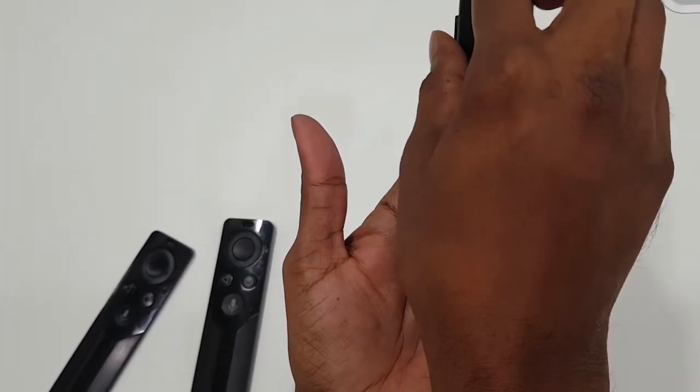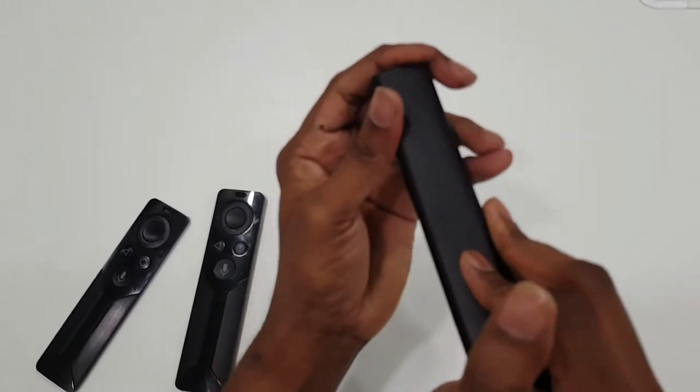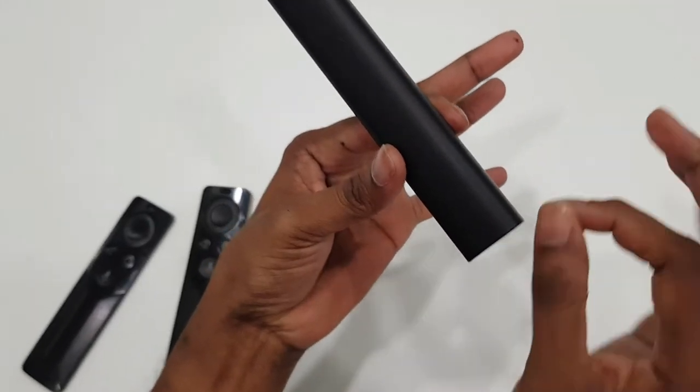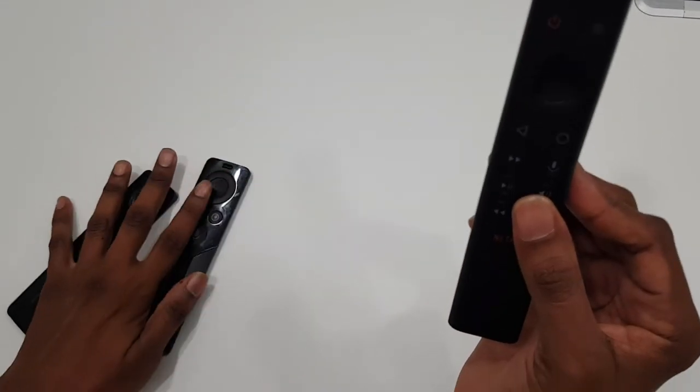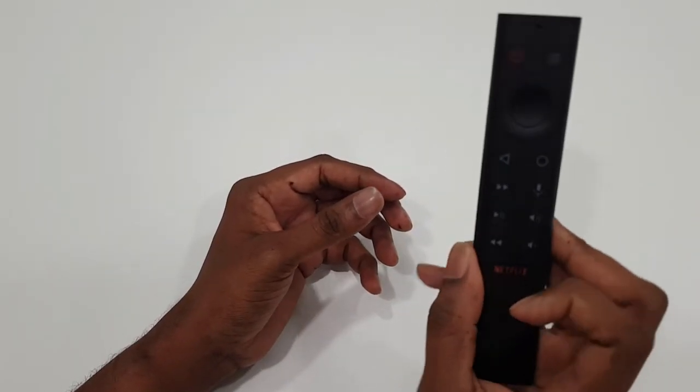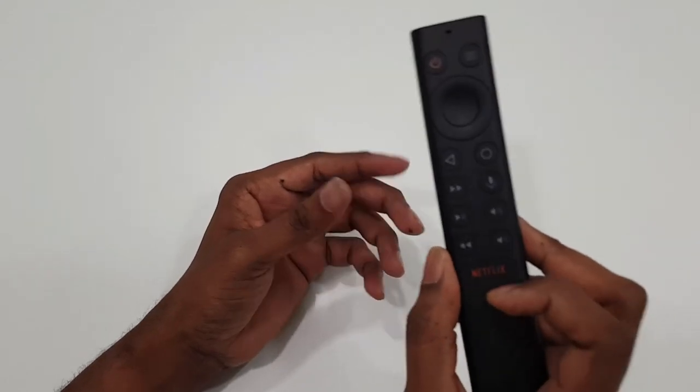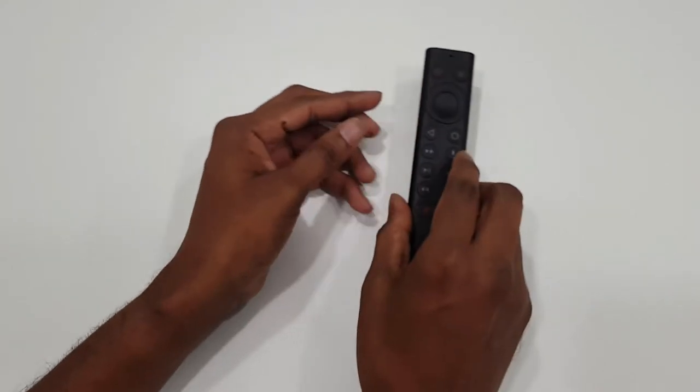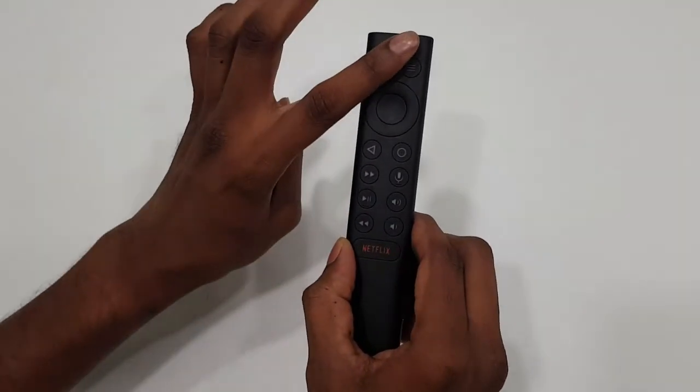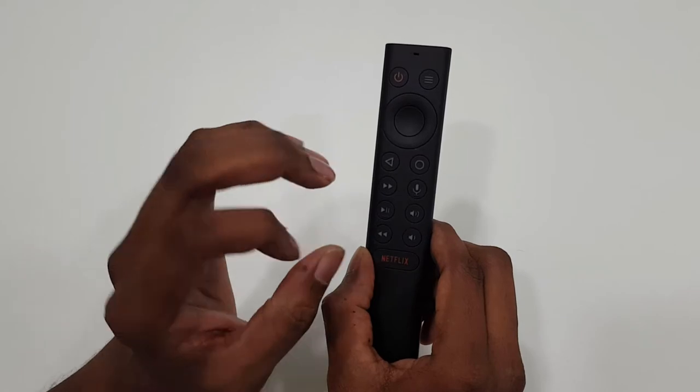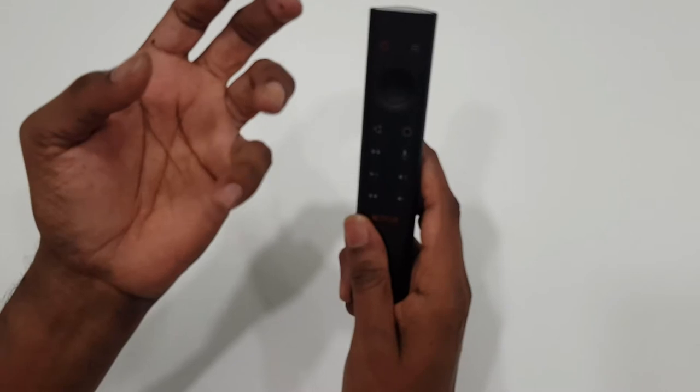There are certain features of this 2019 remote. When it is paired along with the Shield, you keep it and then pick it up, all these lights will start glowing. It's very luminant, not very bright. When you pick it up the light will start glowing maybe around 5 to 10 seconds and then go off.